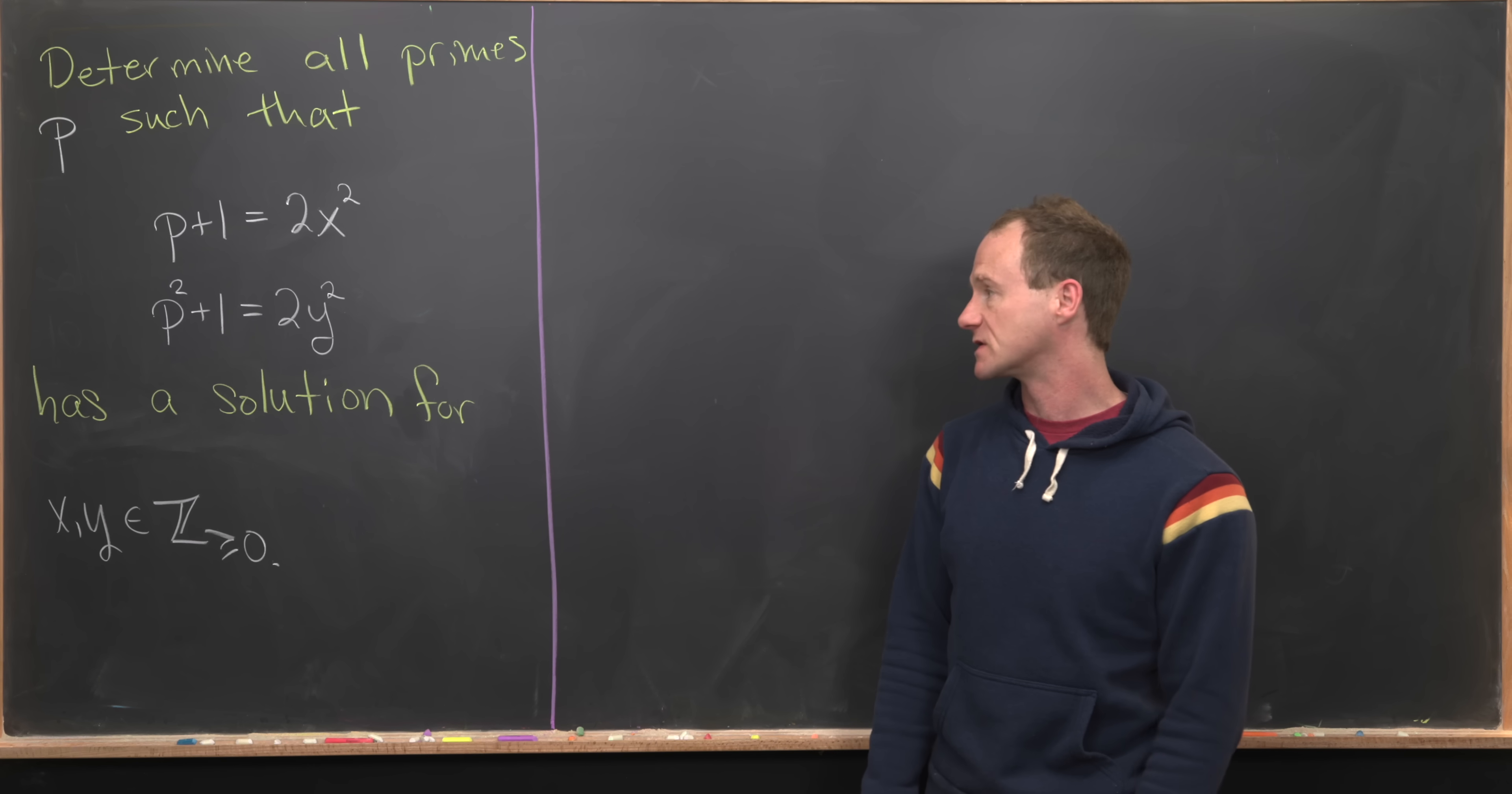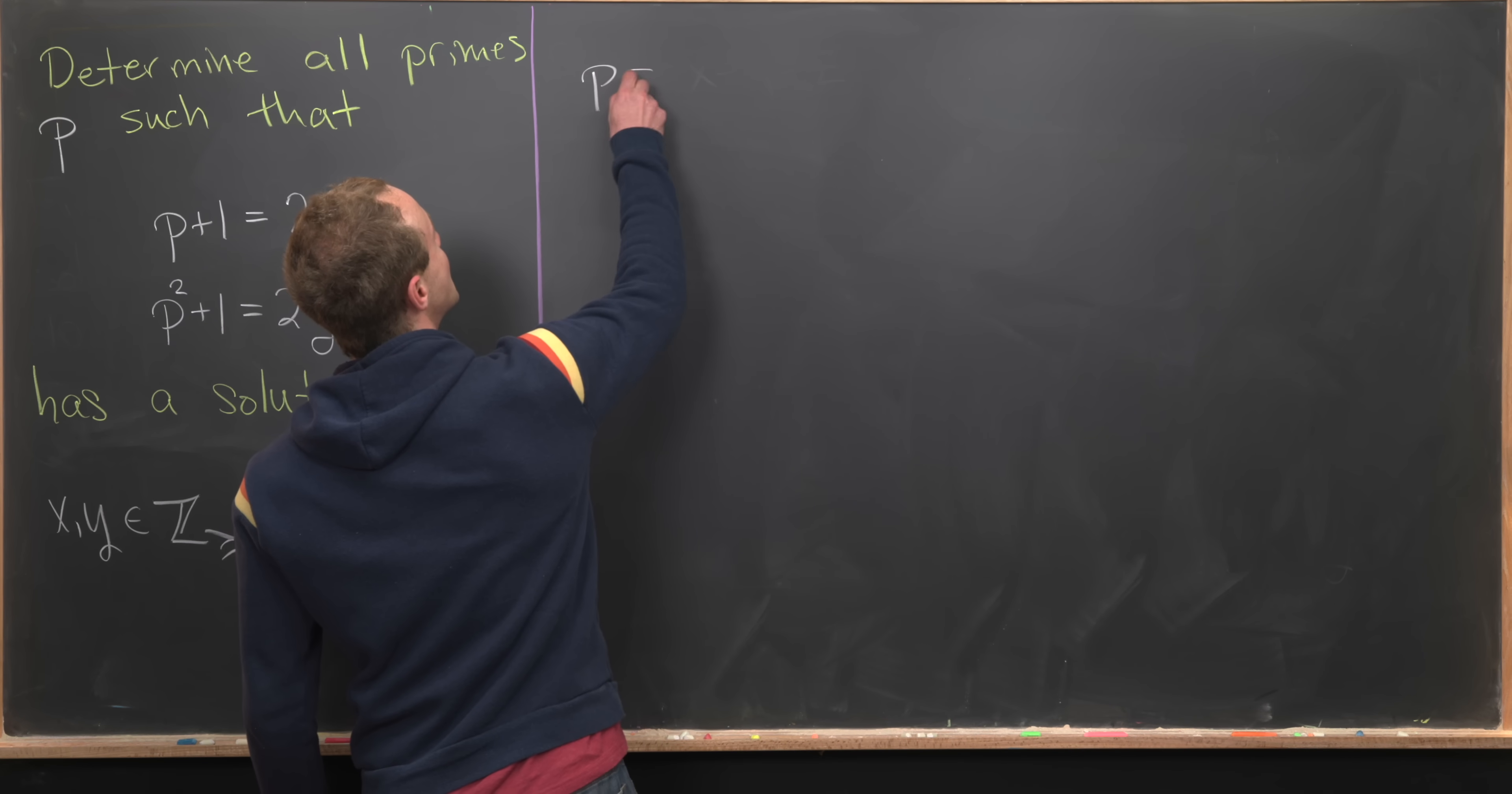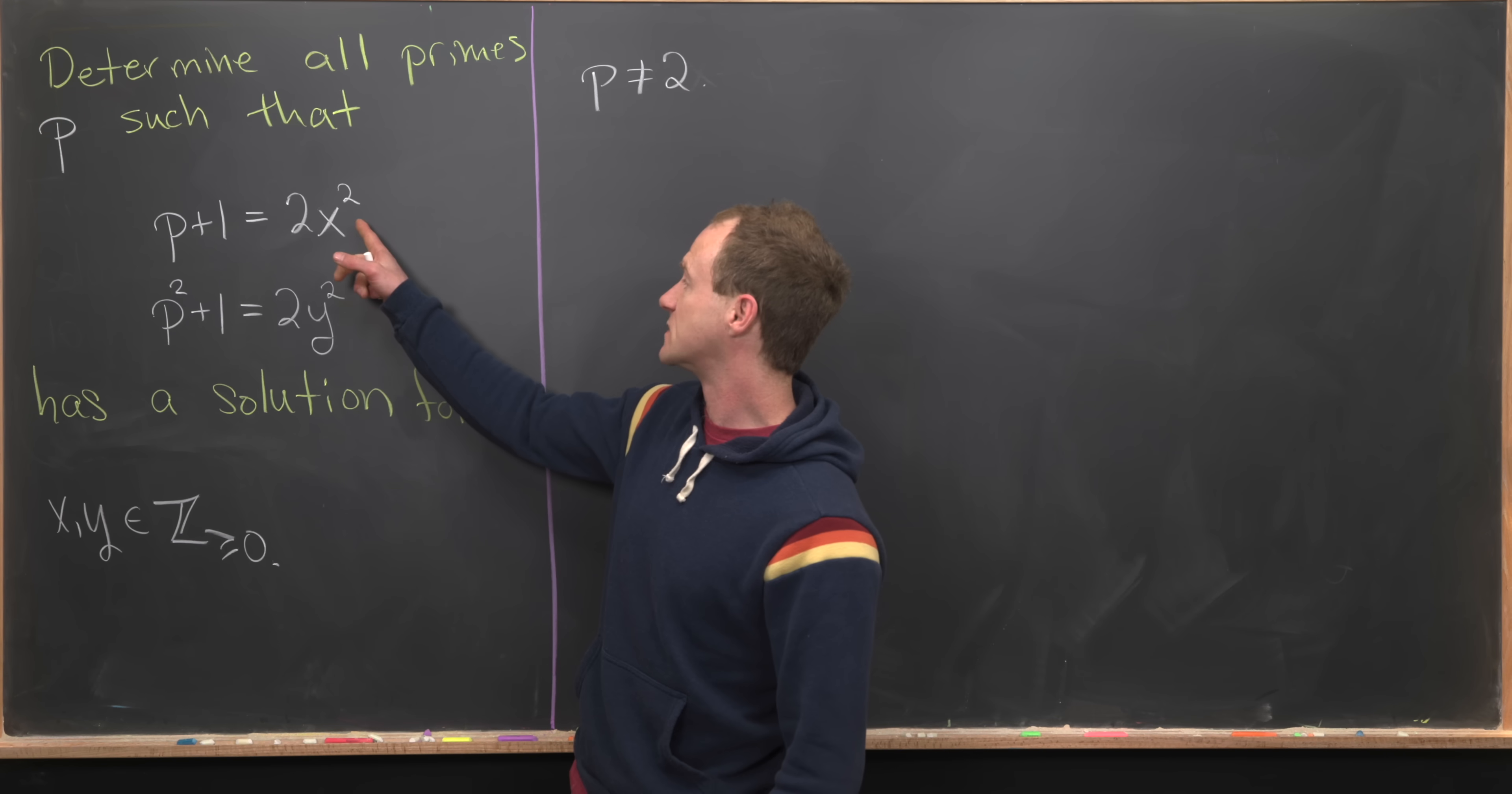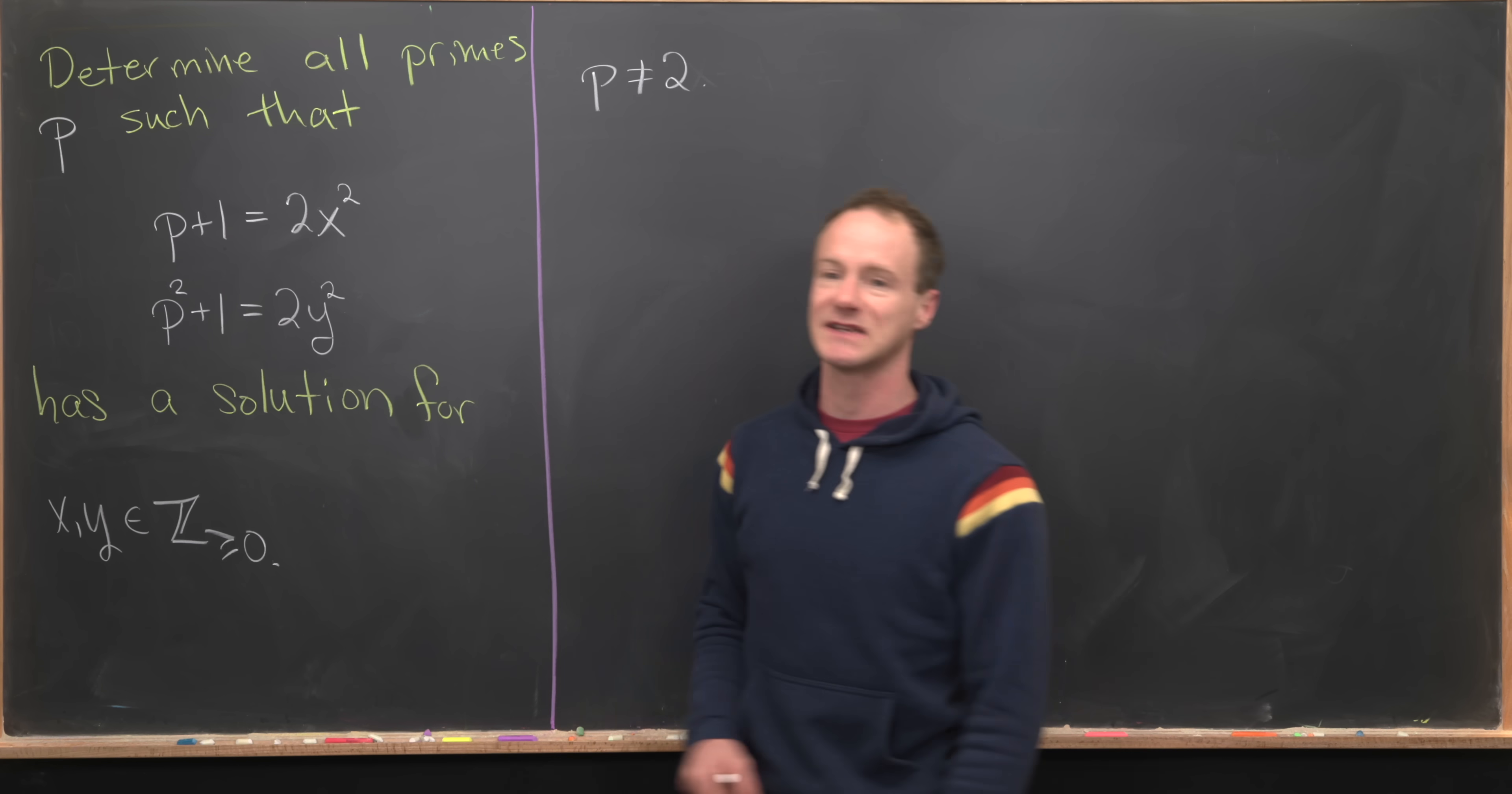Let's jump into the solution. The first thing I want to notice is that p cannot equal 2. That's because the right-hand side of each equation is even, which means the left-hand side is even.